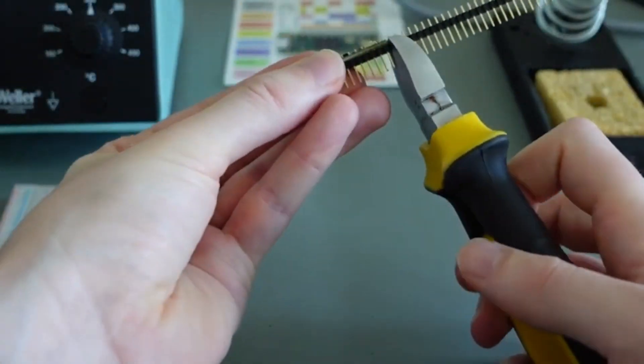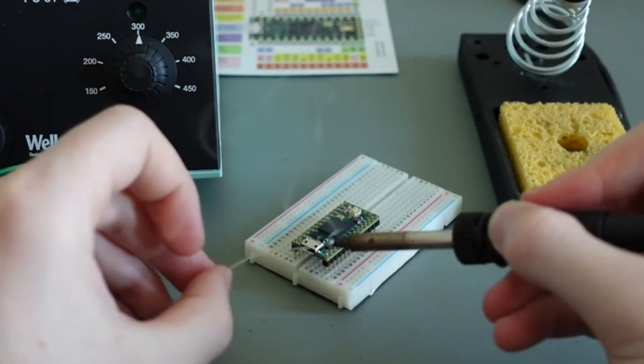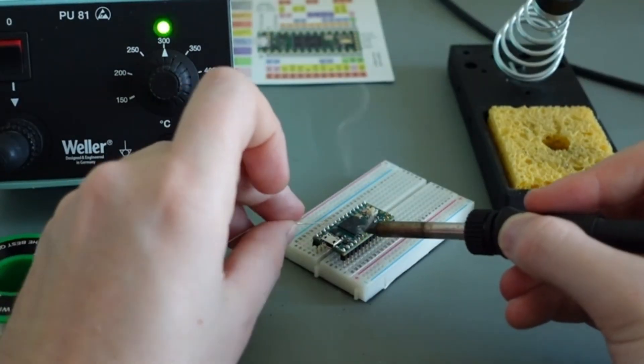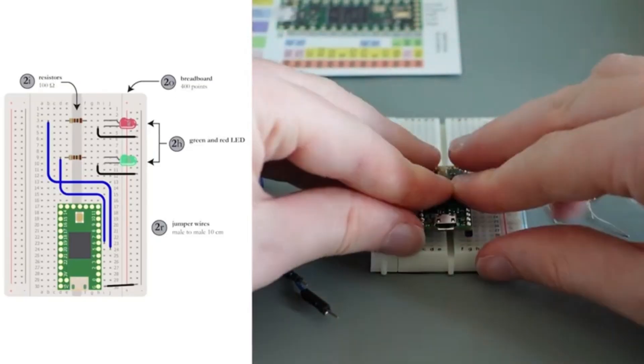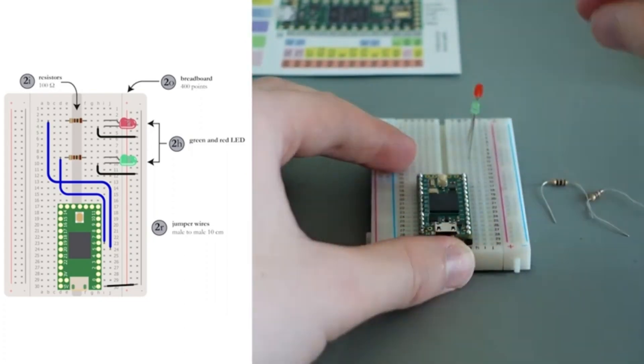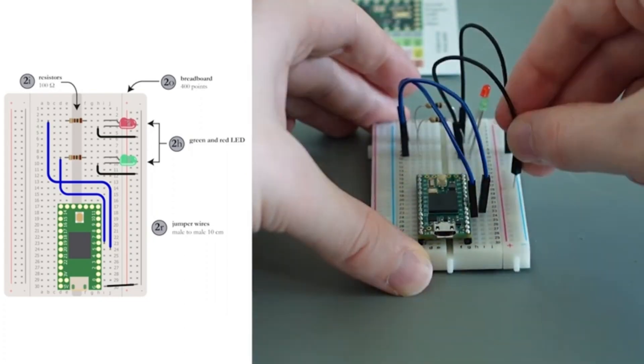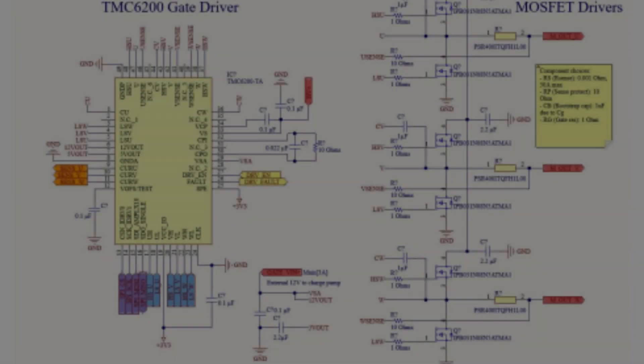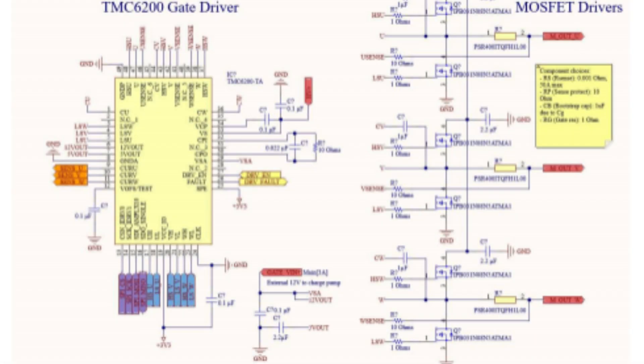At the core lies the flight control system — a real-time decision engine. It combines sensor data with pilot input to adjust flight attitude, stability, and orientation.